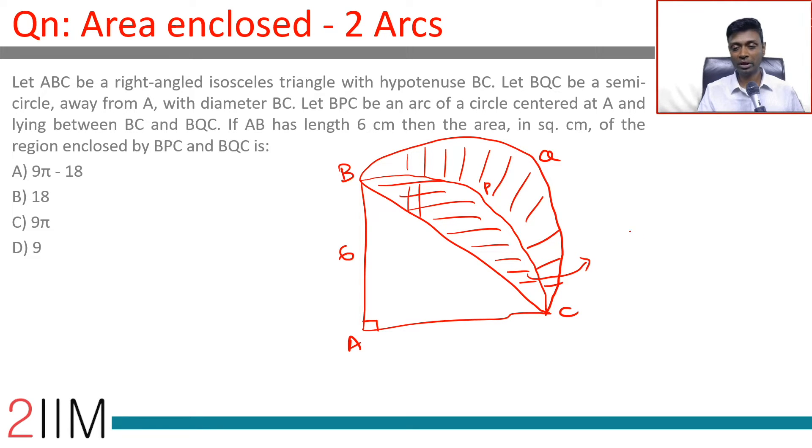How do we find area of this segment? This is one-fourth because it is a right—of pi into 6 square. So one quadrant of a circle of radius 6 minus half into 6 into 6.